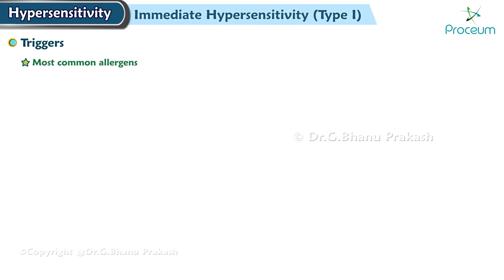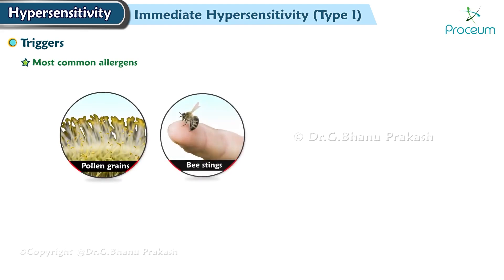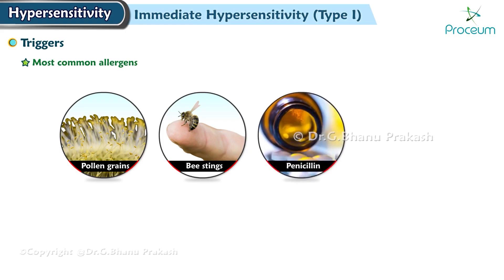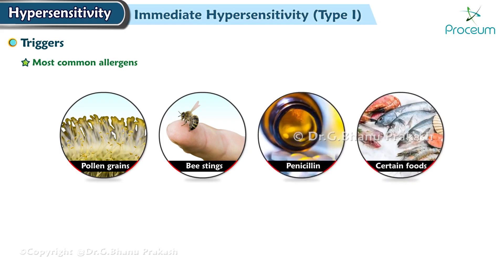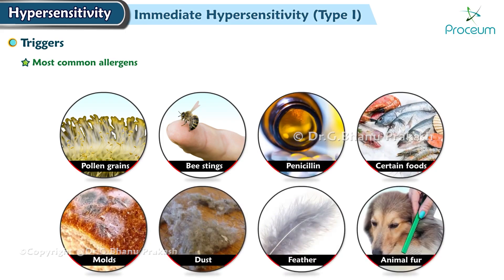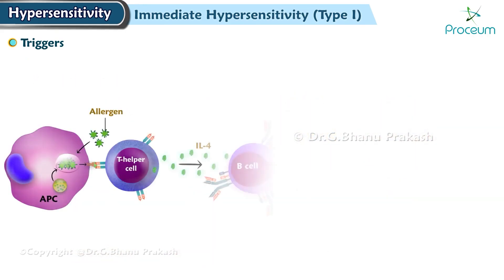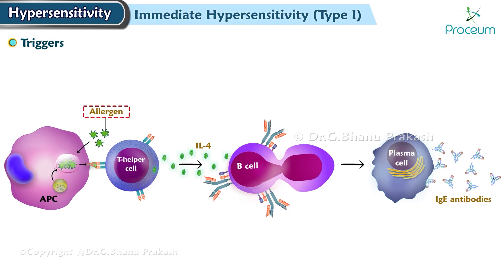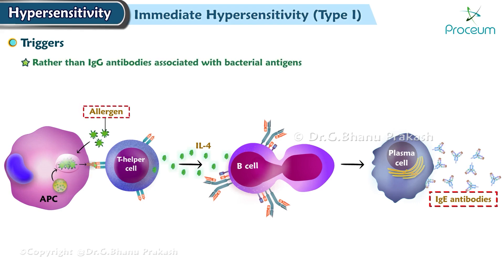The most common allergens that provoke immediate hypersensitivity are pollen grains, bee stings, penicillin, certain foods, molds, dust, feathers, and animal fur. For unclear reasons, these allergens bind to and elicit the synthesis of immunoglobulin E antibodies rather than the immunoglobulin G antibodies associated with bacterial antigens.